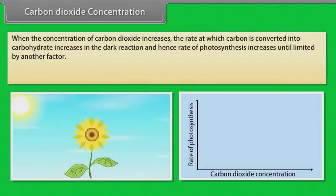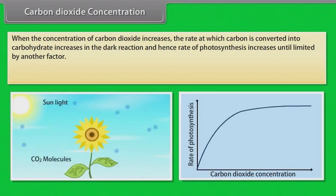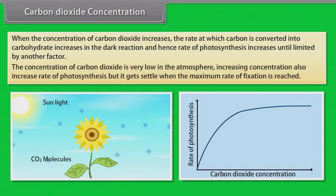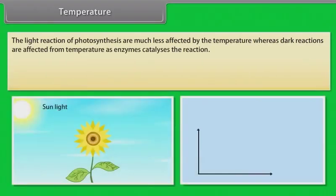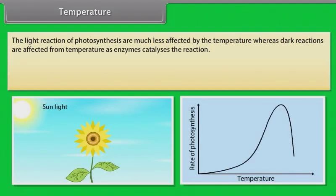When the concentration of carbon dioxide increases, the rate at which carbon is converted into carbohydrate increases in the dark reaction, and hence the rate of photosynthesis increases until limited by another factor. The concentration of CO2 in the atmosphere is very low; increasing concentration also increases the rate of photosynthesis, but it levels off when the maximum rate of fixation is reached. The light reactions of photosynthesis are much less affected by temperature, whereas dark reactions are affected by temperature as enzymes catalyze the reactions.